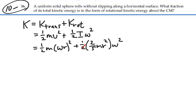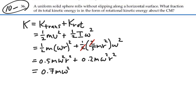So these twos here cancel out. And we can rewrite this. One-half is going to be point-five m omega squared r squared plus one-fifth is going to be point-two m omega squared r squared. So our total kinetic energy is going to be point-seven times the mass omega squared r squared.